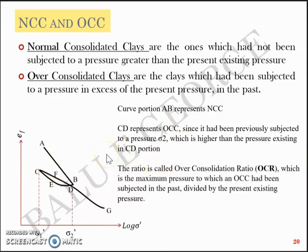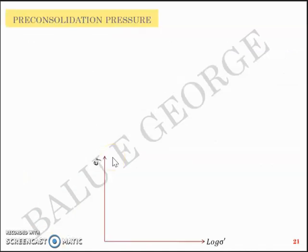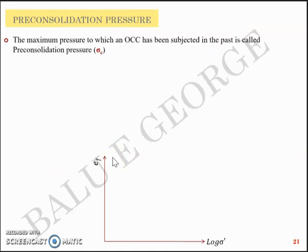This ratio is called the over-consolidation ratio, OCR, which by definition is the maximum pressure to which the OCC had been subjected in the past divided by the present existing pressure. Sigma two dash is the maximum pressure to which the soil had been subjected in the past, and sigma one dash is the stress that is present. So sigma two dash by sigma one dash is what we call the over-consolidation ratio OCR. Another term is pre-consolidation pressure — the maximum pressure to which an OCC had been subjected in the past is called pre-consolidation pressure, sigma c.